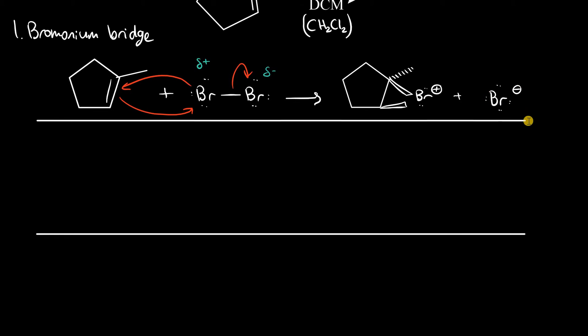Now in step two, the bromide attacks the bromonium bridge in a typical nucleophile to electrophile interaction. One thing to realize is that the bridge is formed out of the plane on a wedge.